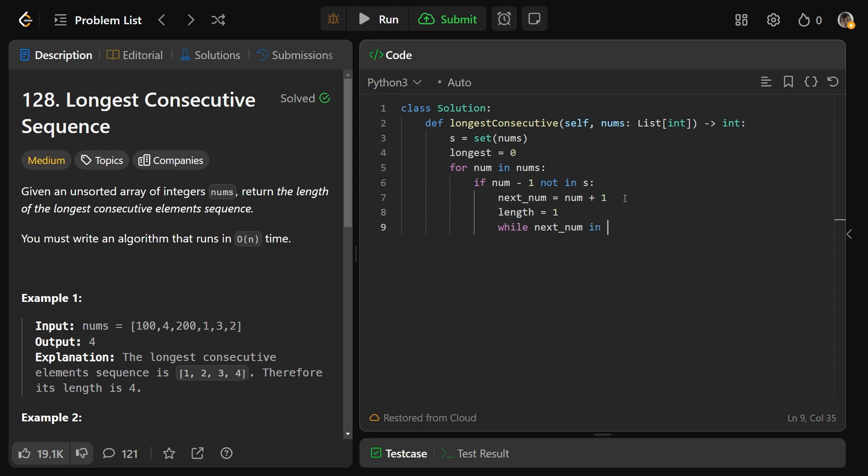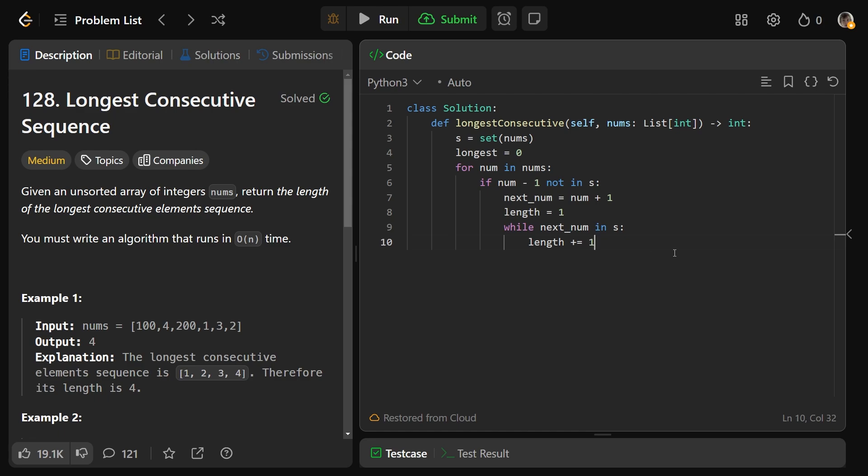Now, while the next num is in the set S, the length that we've seen is 1 more, so our sequence is 1 more, and we need to bump up that next number to keep this check going. So after we eventually break out of this loop, finally, at some point, our next number was not in the set, so our sequence concludes.